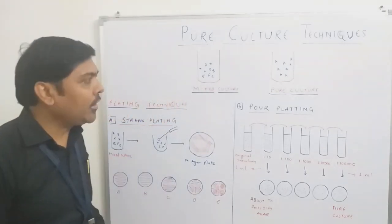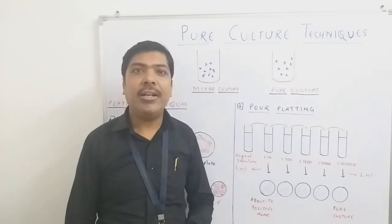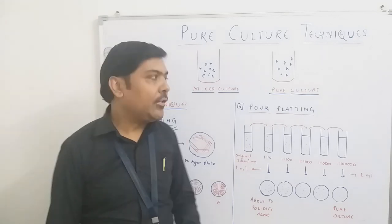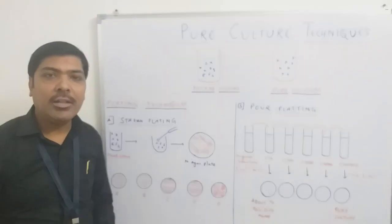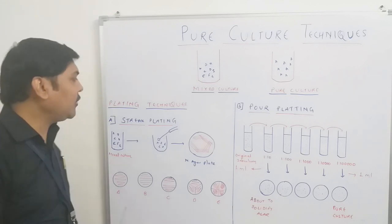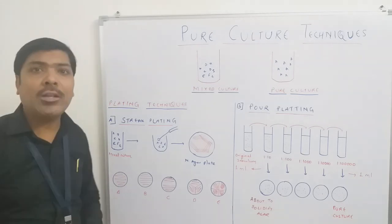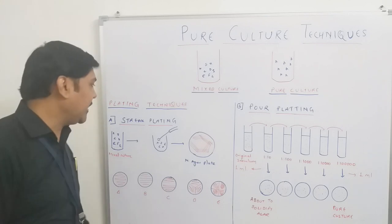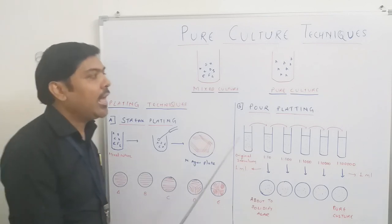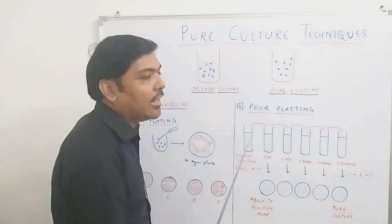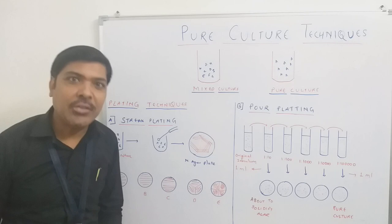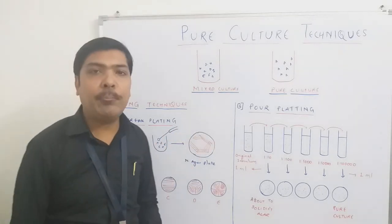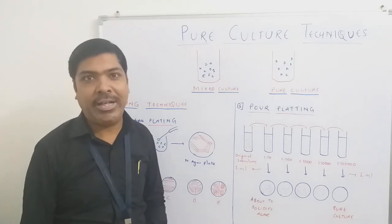In order to get a pure culture, different laboratory methods are available. Especially for aerobic bacteria, two most popular methods adopted in any microbiological laboratory are: number one, the streak plating method, and number two, the pour plating method. We will deal with each one by one.